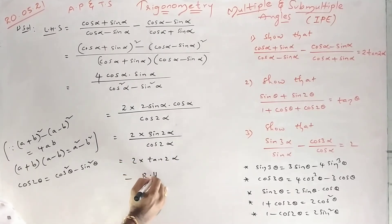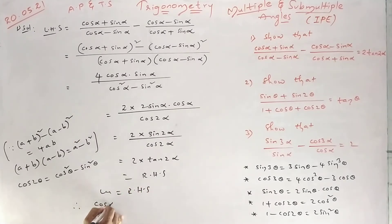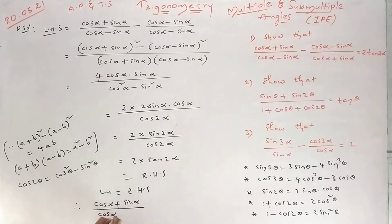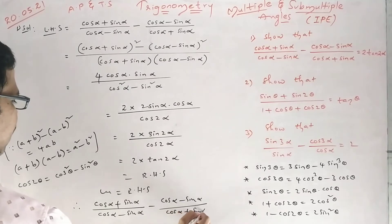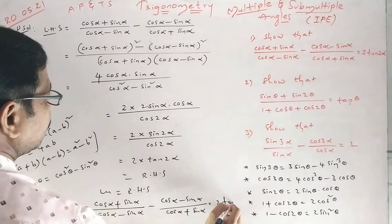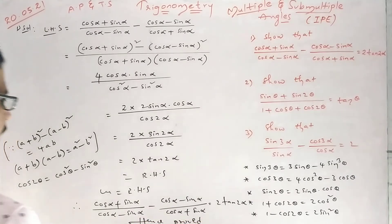So that is our RHS. LHS equals RHS. Therefore, (cosα + sinα)/(cosα − sinα) minus (cosα − sinα)/(cosα + sinα) equals 2tan2α. Hence proved. That is the way we have to prove that.